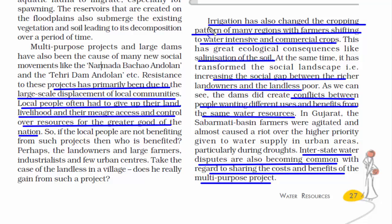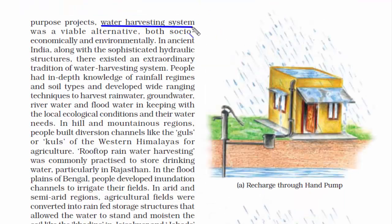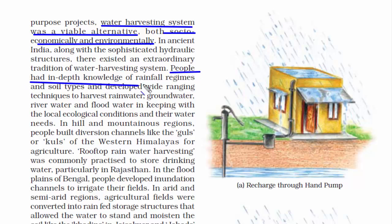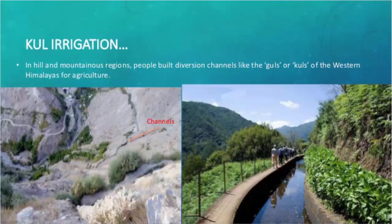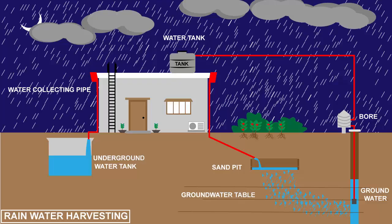The next topic is rainwater harvesting — a viable alternative that is both socio-economically and environmentally good. Over time, people have developed wide-ranging techniques to harvest rainwater, groundwater, river water, and floodwater. In hilly and mountainous regions, people have built narrow diversion channels like gullies to supply water for agriculture. Rooftop rainwater harvesting is heavily practiced in Rajasthan — all stored water from the roof goes down through a pipeline and is saved into an underground pit, like a sump, for use during summer.